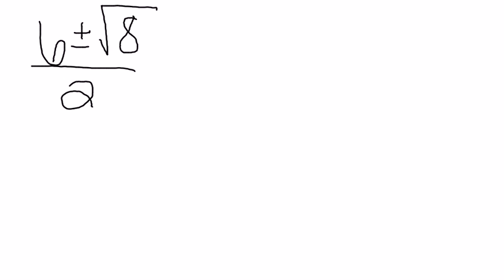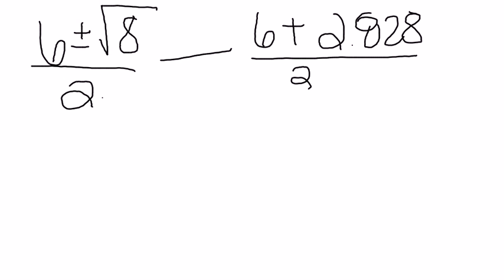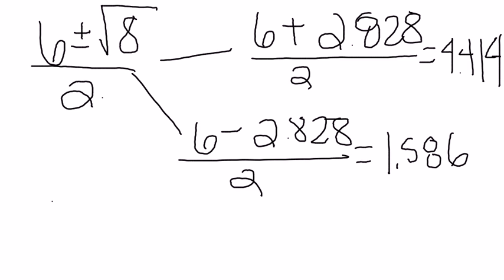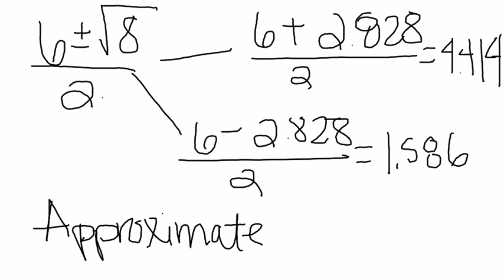Now I'm going to show you how to find the approximate form. First we've got 6 plus the square root of 8, and when I plug that into my calculator and round, I get 2.828 and then we divide by 2. We also have 6 minus 2.828 divided by 2. We get for our answers x equals 4.414 and x equals 1.586. This is the approximate form because we plugged and rounded that square root of 8 into our calculator.